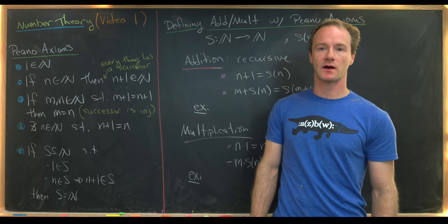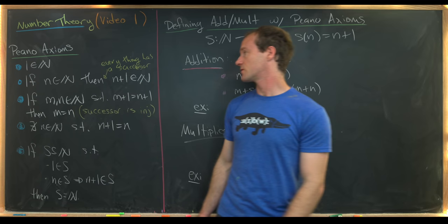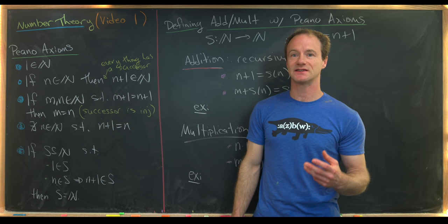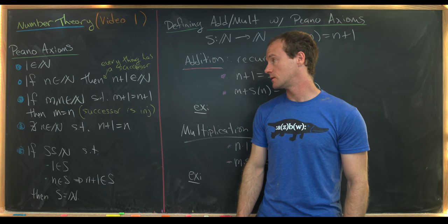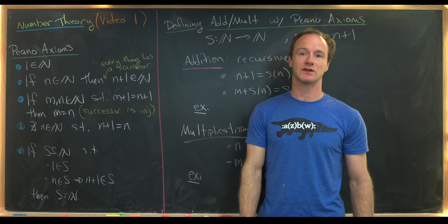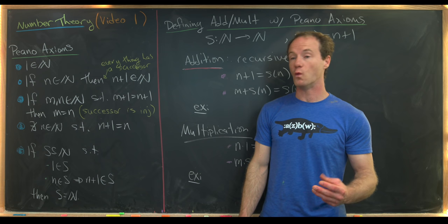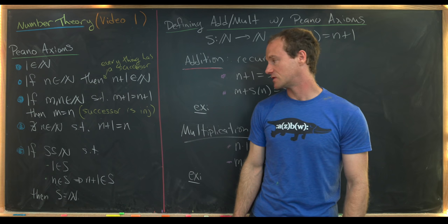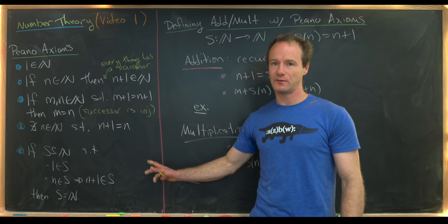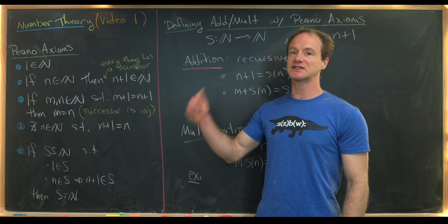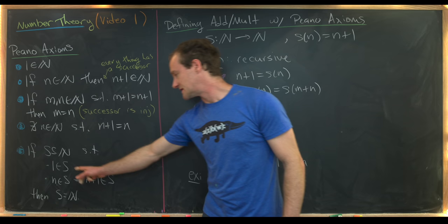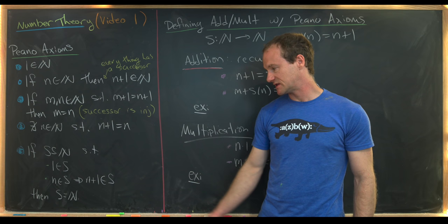The Peano axioms for the natural numbers are as follows — we've got five of them. One is a natural number. If n is a natural number then n plus one is a natural number, so everything in the natural numbers has a successor. If m and n are natural numbers such that the successor of m equals the successor of n, then m equals n — in other words the successor function is injective. There is no natural number n such that n plus one equals one. And finally, the inductive axiom: if S is a subset of the natural numbers containing one, and if n in S implies n plus one is in S, then S equals the natural numbers.